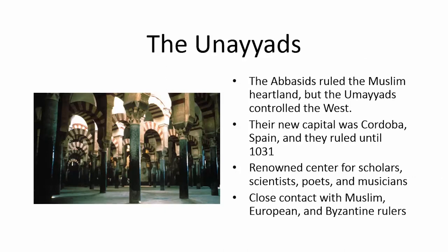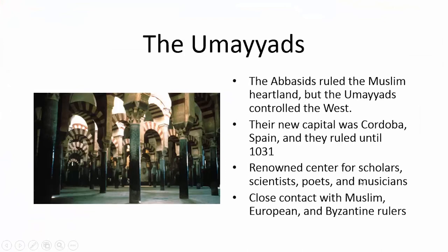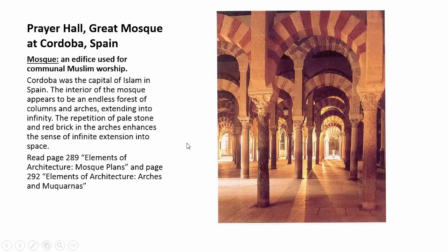The first group we're going to look at are the Umayyads. The Abbasid dynasty ruled the Muslim heartland — Arabia and the Middle East — but the Umayyads controlled the West and built a capital in Cordoba, Spain, ruling there until 1031. Cordoba became a center for scholars, scientists, poets, and musicians. Byzantine and European rulers came from Germany and France. It was a very great learning center. This is the inside of the prayer hall in the great mosque at Cordoba, the capital of Islam in Spain.